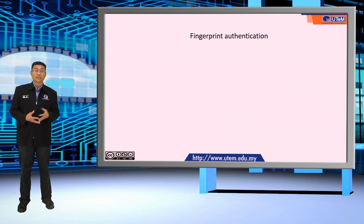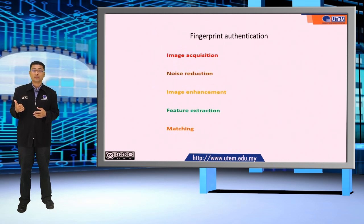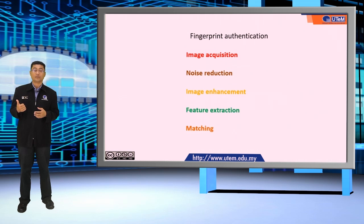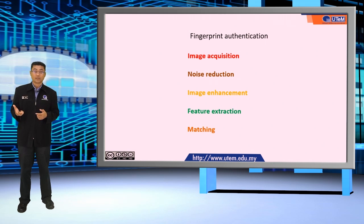Continuing with the fingerprint authentication, the basic steps for fingerprint authentication are: one, the image acquisition; noise reduction; the image enhancements; the feature extraction; and finally, the matching.